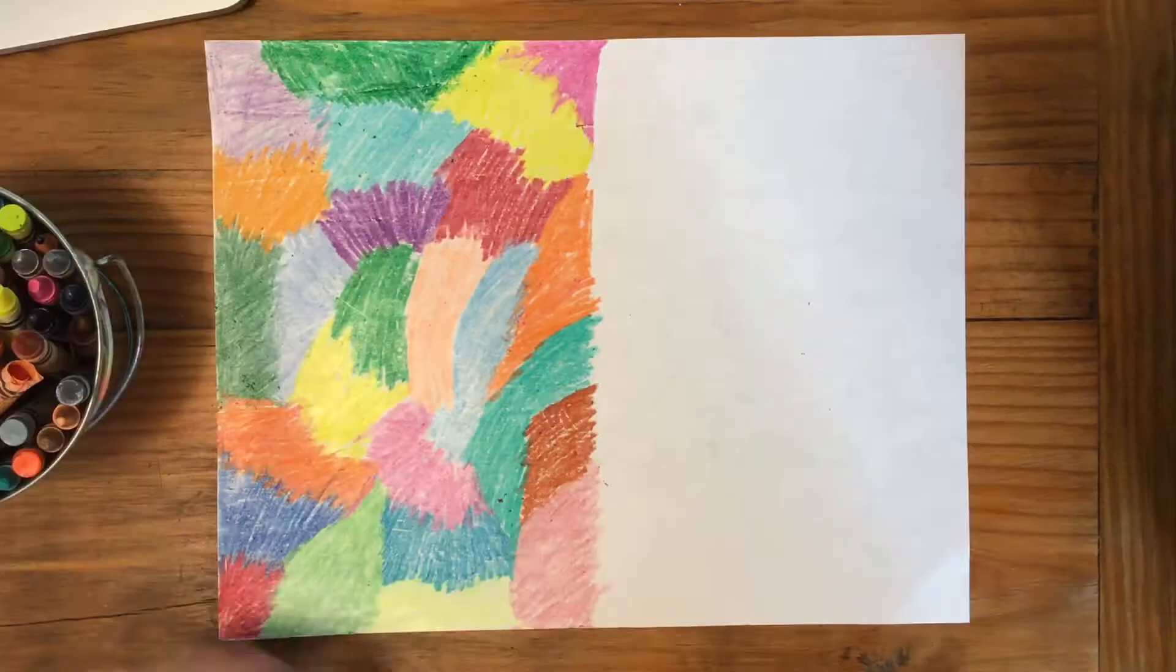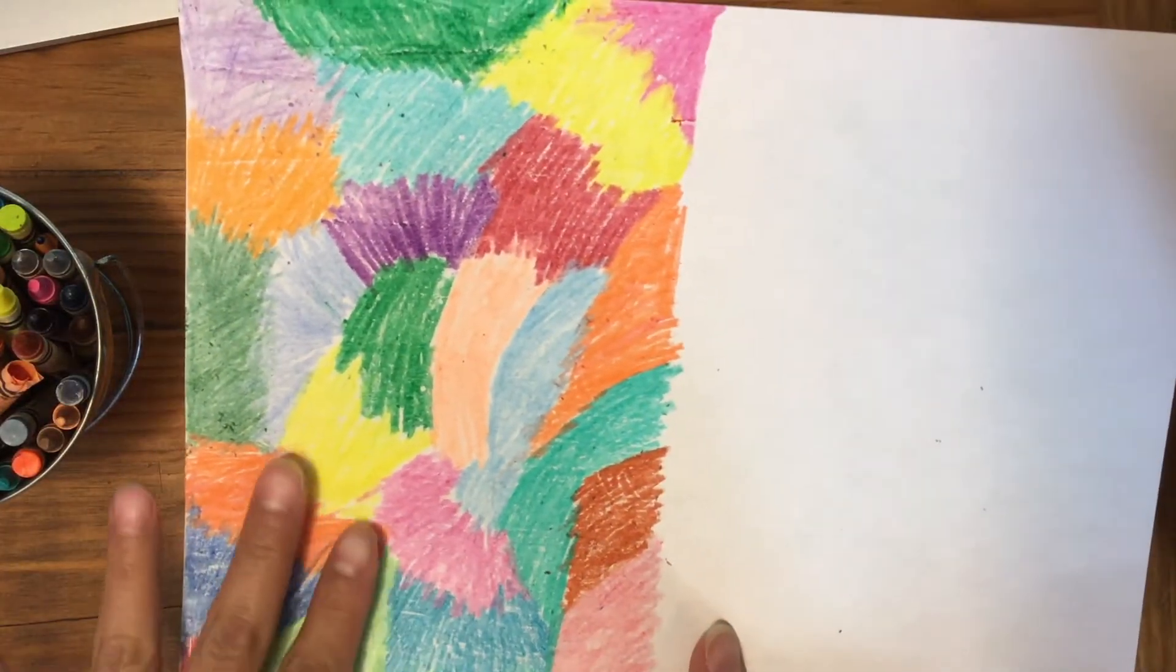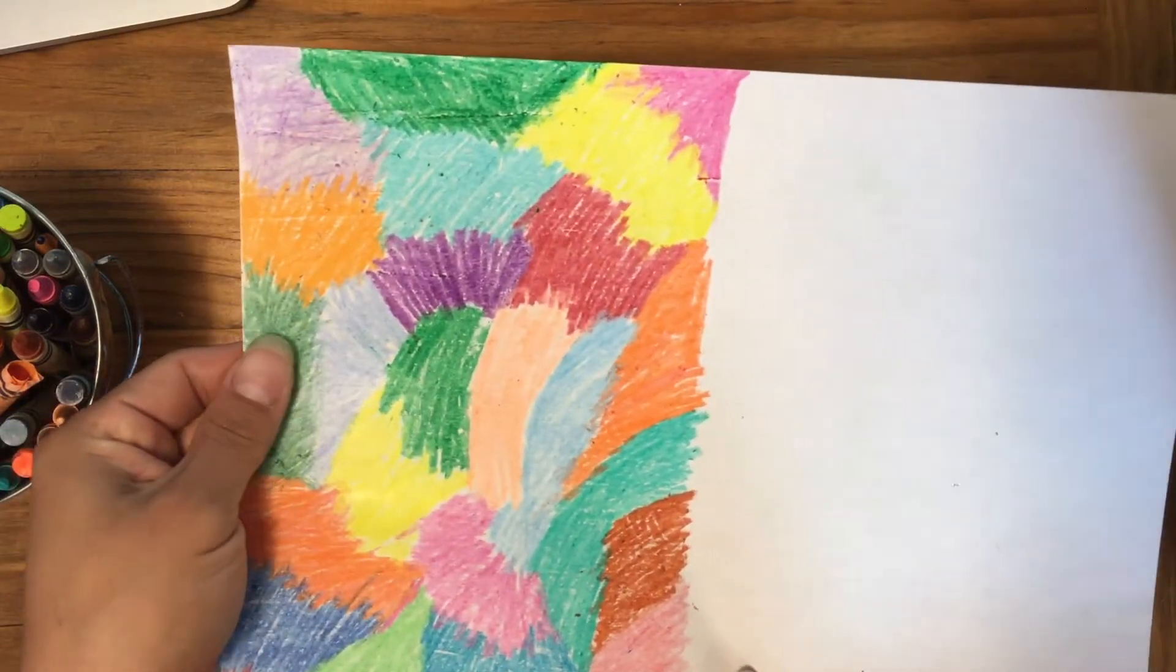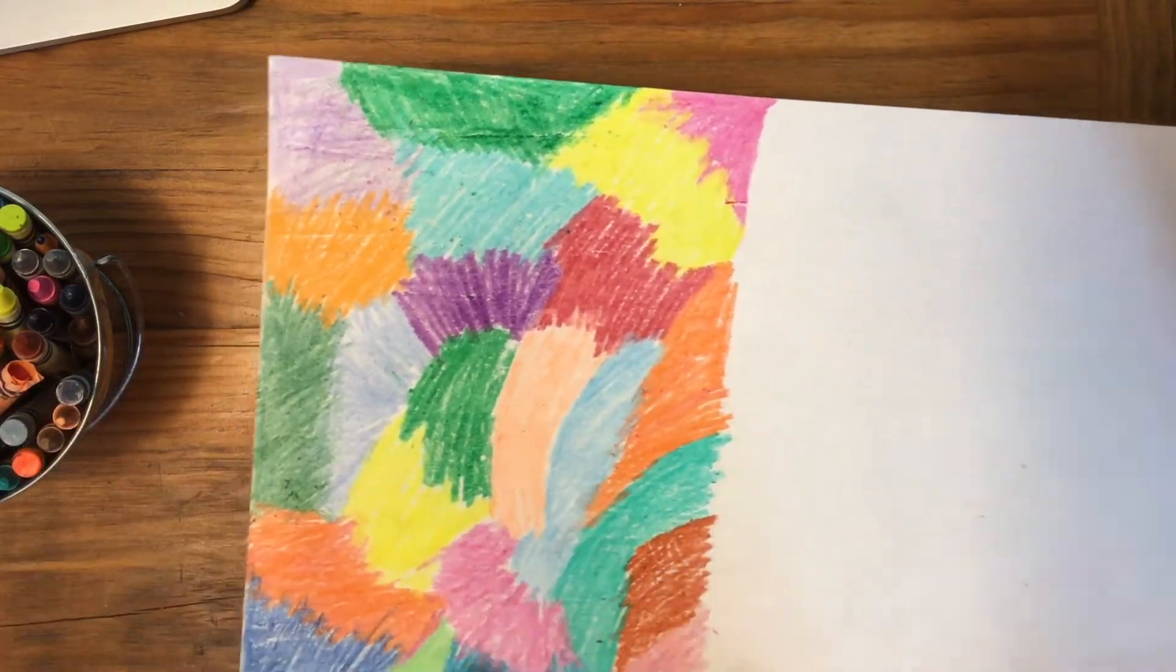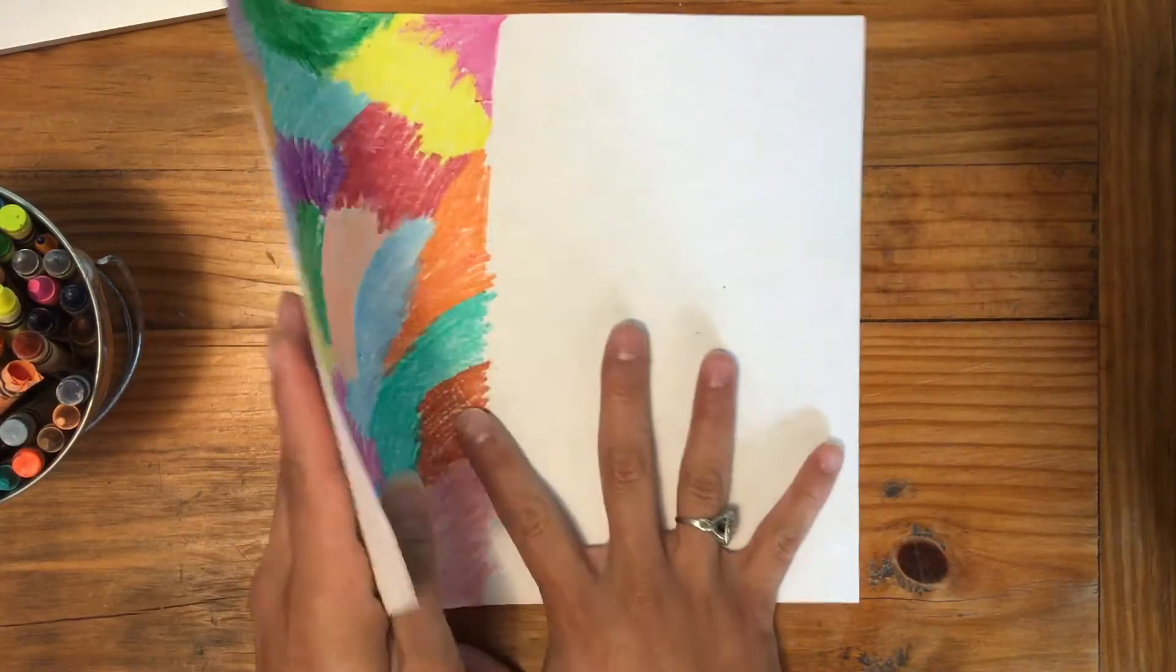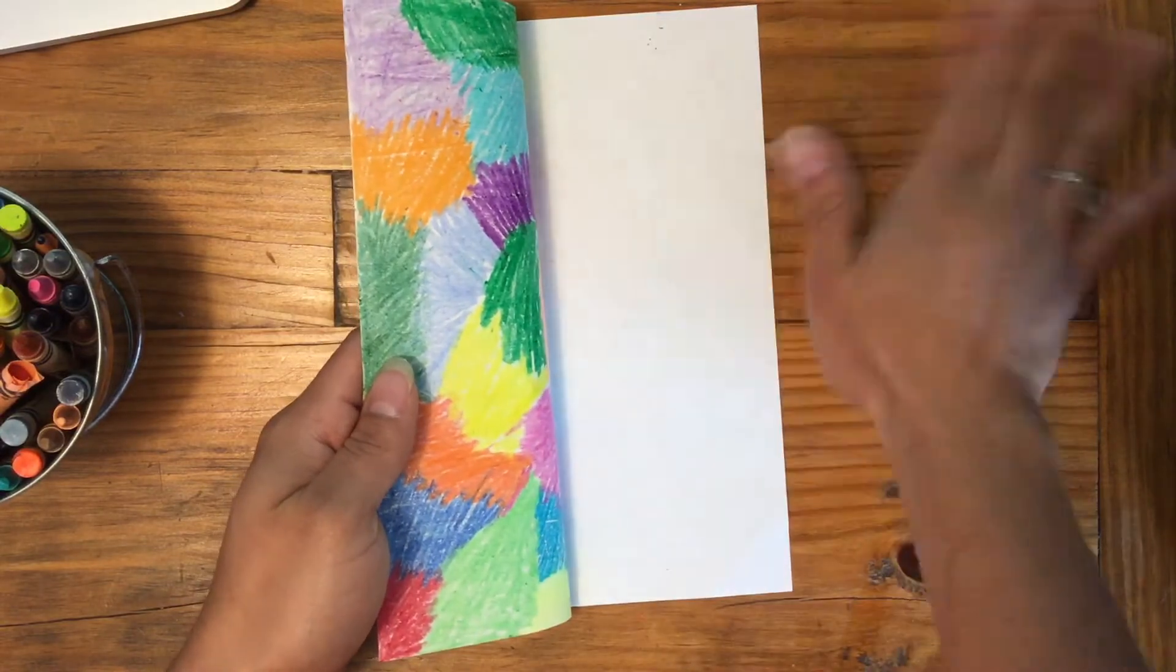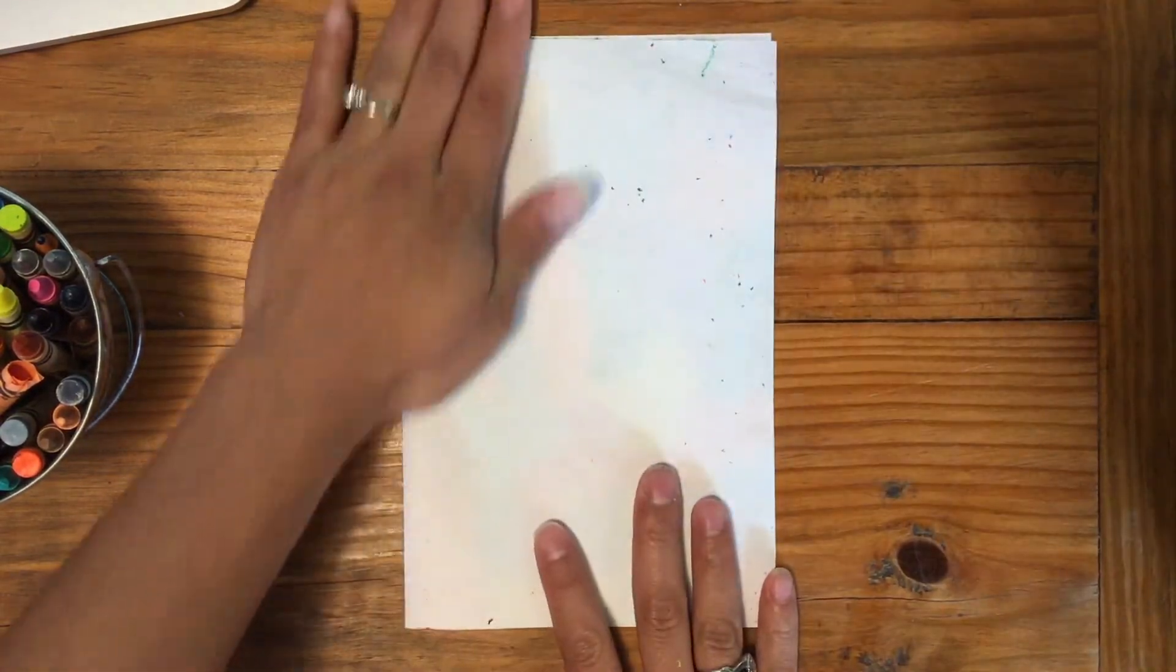So here's my paper completely covered. I pressed as hard as I could and tried to leave as little white space as possible. Now what I'm going to do is fold my paper making sure this is on the inside and fold it back.